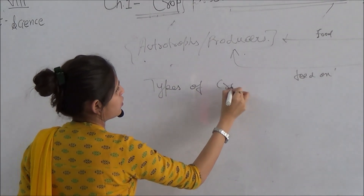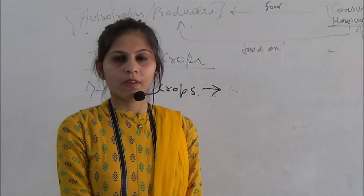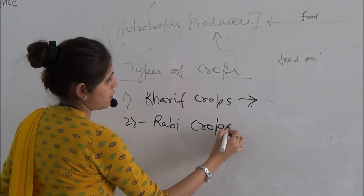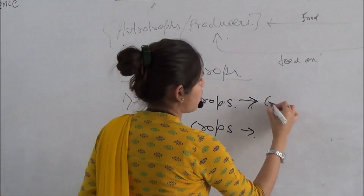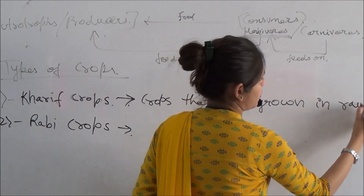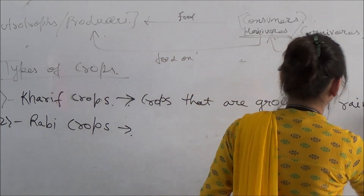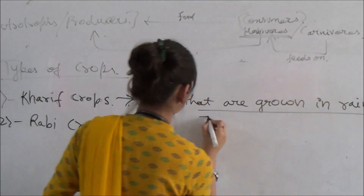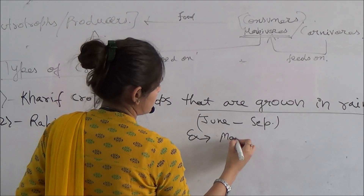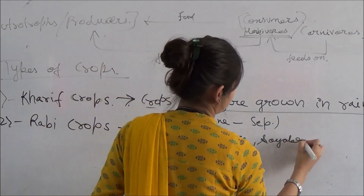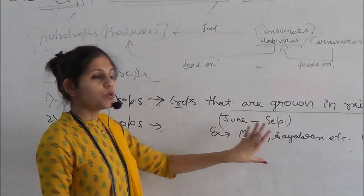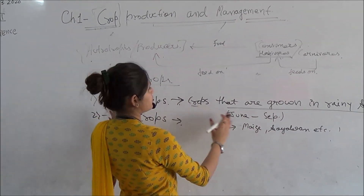There are two types of crops. First is Kharif crops and second is Rabi crops. Kharif crops are crops that are grown in the rainy season, from June to September. For example, maize and soybean. These are Kharif crops — crops that are grown in the rainy season only, from June to September.